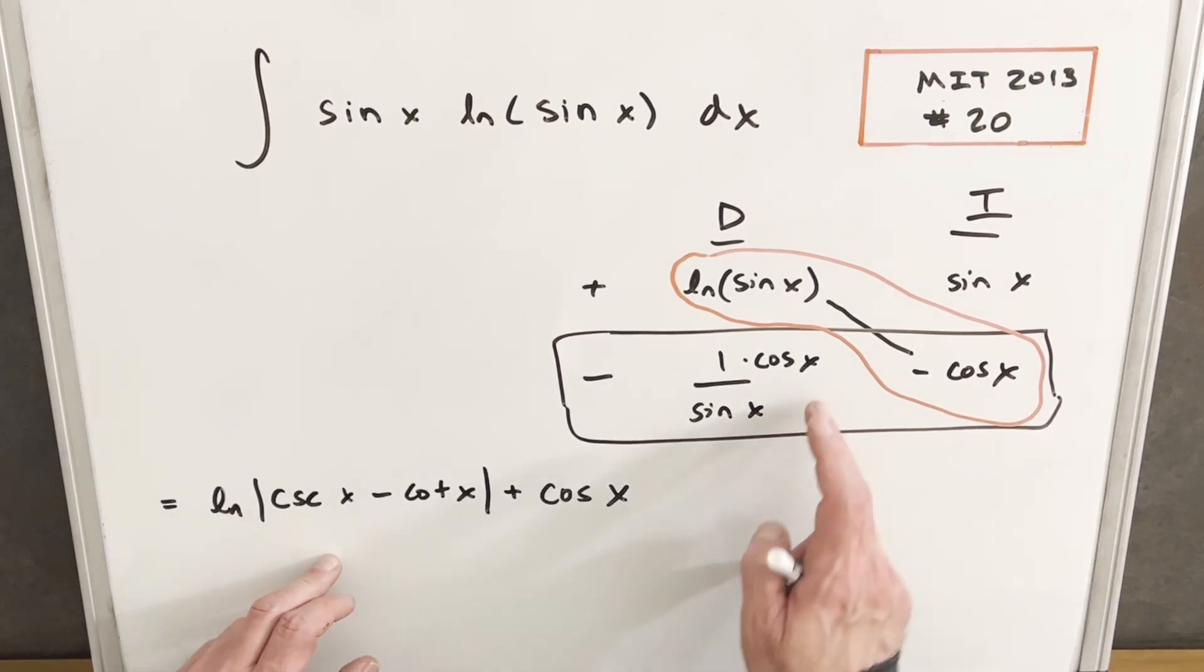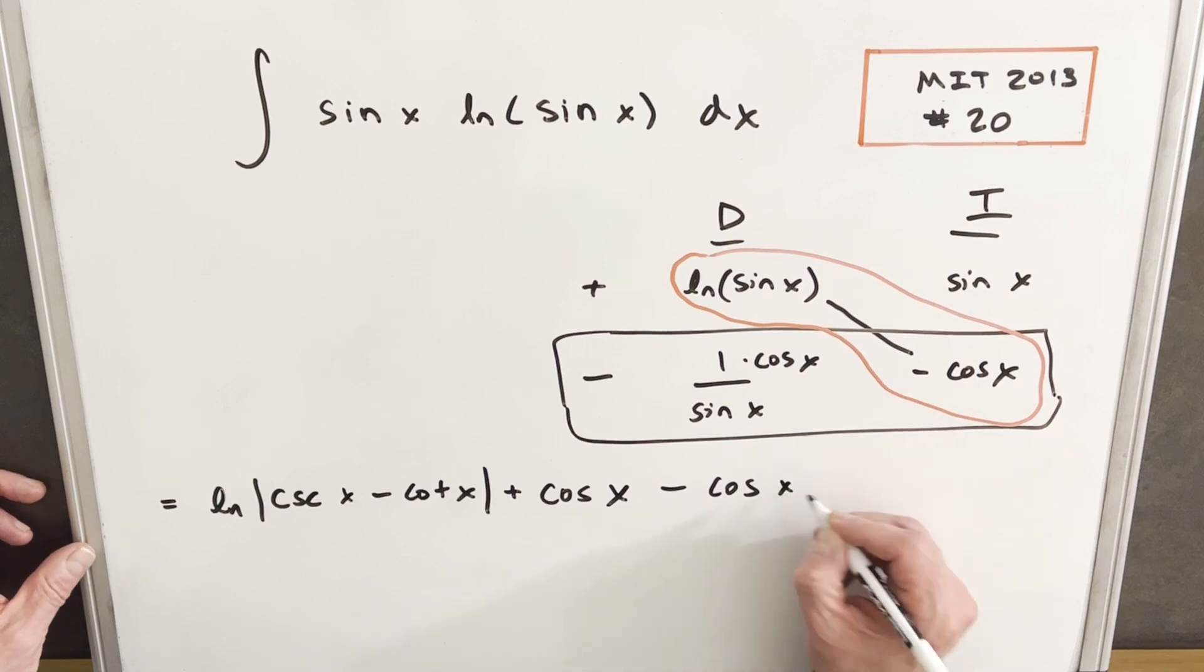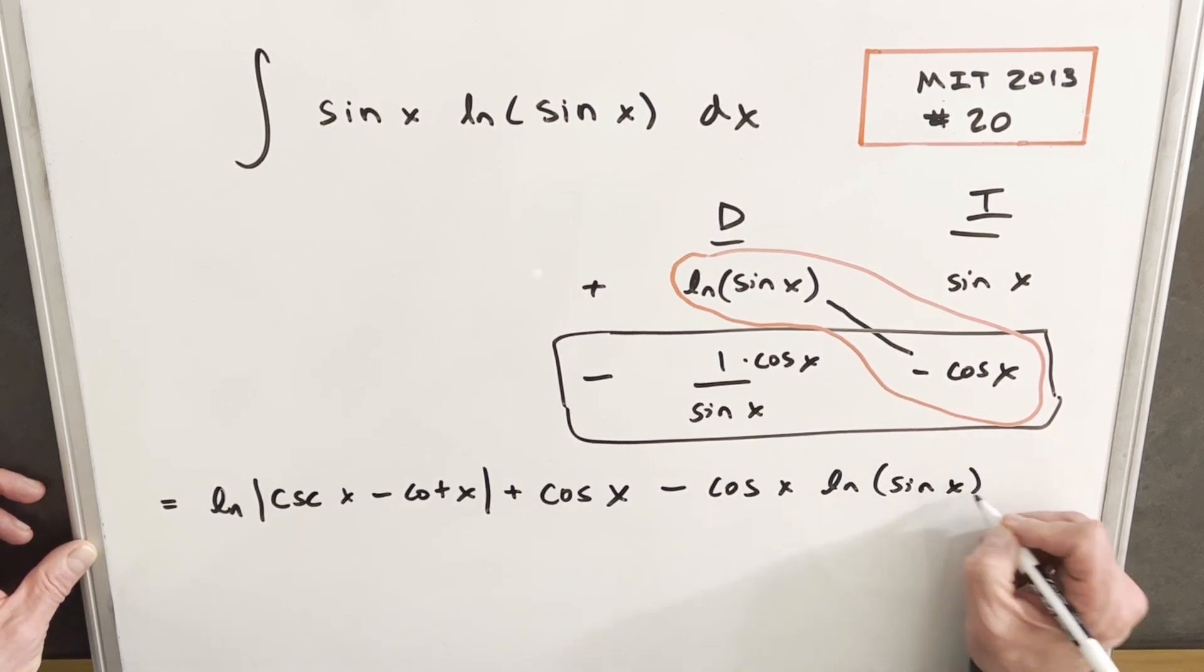Okay, so here we just have the result of this integral, which we found on the previous board. And then we just need to add in this piece. So rewriting this is going to be, we're going to have, I'll write the cosine out front. So we'll have minus cosine x natural log sine x plus c.